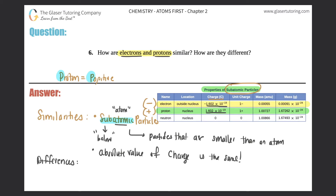Now let's talk about the differences — there are going to be more differences here. One specific difference is that the proton will always carry a plus one charge, it's positive, while the electron will always carry a negative one charge. So that's one clear distinction: a proton always brings a positive charge, and the electron will always be negative.